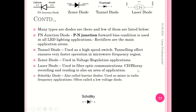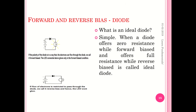All these are important when you go to an interview. They may ask you to mention at least five types of diodes — in that case this will certainly be helpful. Now, what is an ideal diode? Very simple: if the diode offers zero resistance when forward biased and if it offers 100% resistance when reverse biased, it is called an ideal diode.